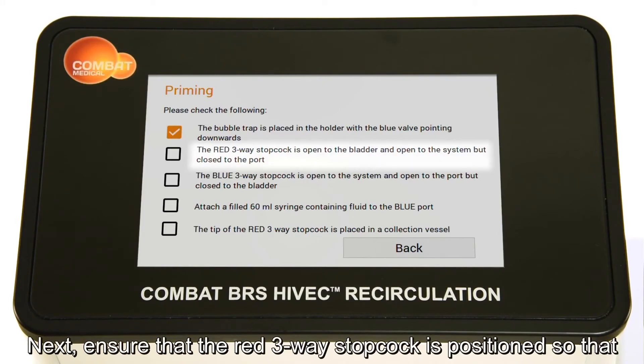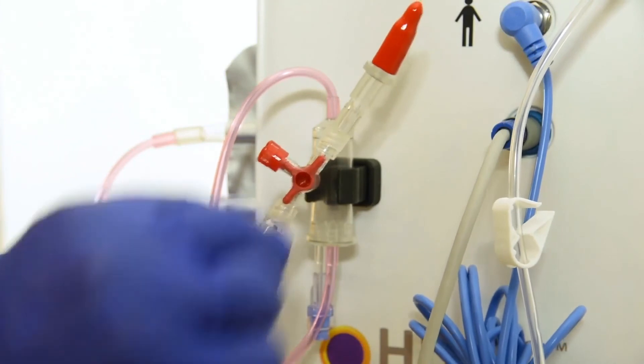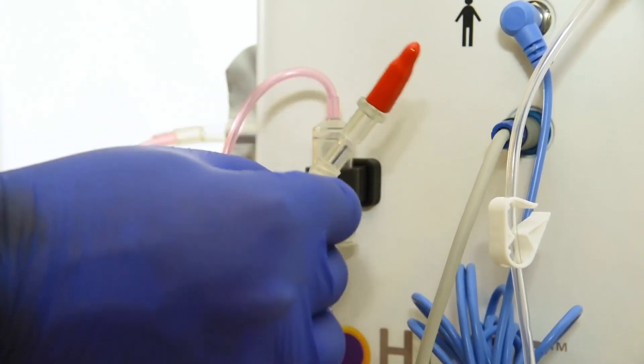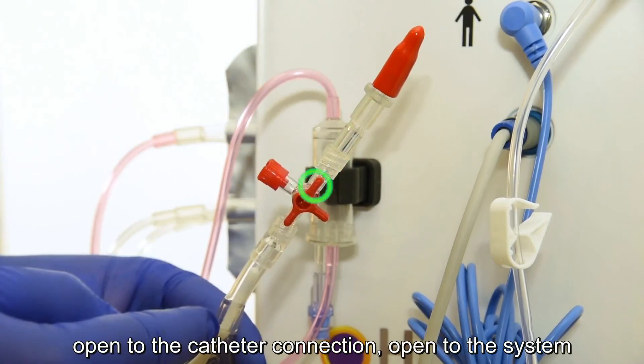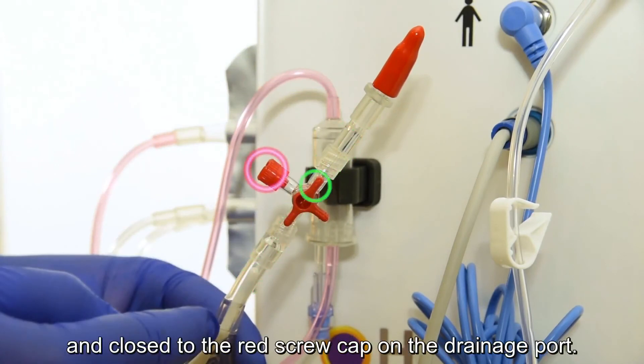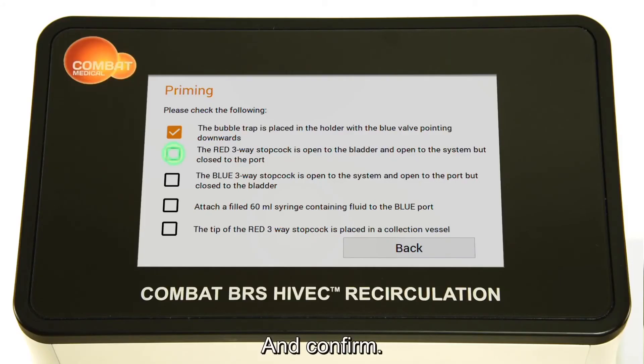Next, ensure that the red three-way stopcock is positioned so that it is in line with the tubing. Open to the catheter connection, open to the system and close to the red screw cap on the drainage port. And confirm.